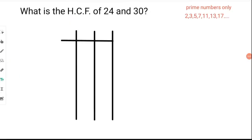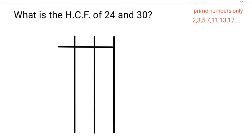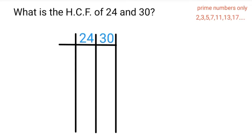For our second method we are going to be using the divisor method, which uses prime factorization to find the highest common factor. As you can see, we have some prime numbers listed here already: 2, 3, 5, 7, 11, 13 and 17, and of course these continue. The first step is to draw up the table, then insert the numbers we are finding the HCF of. The first number is 24 and the second is 30. We need to think of the smallest prime number that can go into both numbers without leaving a remainder.